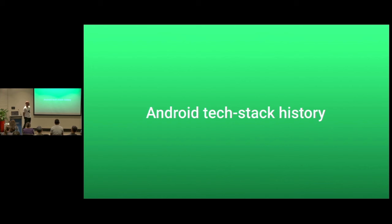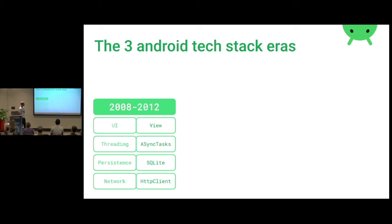To continue, we need to look at what is the current tech stack and what has been the tech stack of Android through its history. I've seen three Android tech stacks so far. In the early days it was just vanilla Android — using Views, AsyncTask for threading, SQLite for persistence with no library, just straight API. And for networking we were using the default HTTP client from Apache, which is a Java library we were importing. That was the old days.